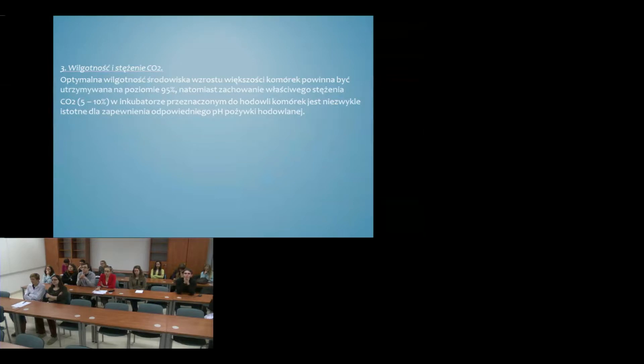Trzecim ważnym aspektem jest optymalna wilgotność i stężenie dwutlenku węgla. Wilgotność utrzymywana jest na poziomie 95%, natomiast stężenie CO₂ wynosi 5–10%, najczęściej 5%. Wszystkie te warunki — temperatura, wilgotność i stężenie CO₂ — są utrzymywane w specjalnych aparatach, inkubatorach przeznaczonych do hodowli komórek i tkanek.